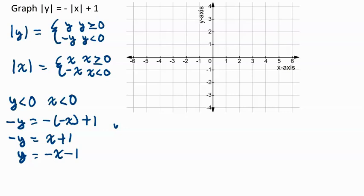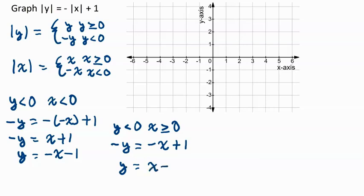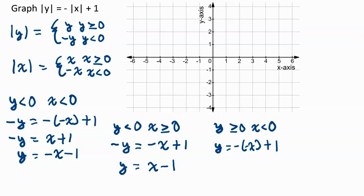Our next case is if y is less than 0 and x is greater than or equal to 0. That means we have negative y equals negative x plus 1, so y equals x minus 1. The next case is y is greater than or equal to 0 but x is less than 0. That means y equals negative x plus 1, which simplifies to y equals x plus 1.